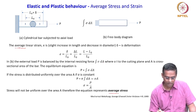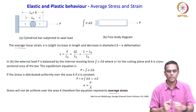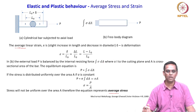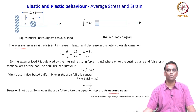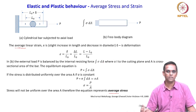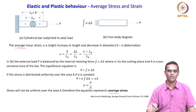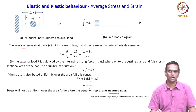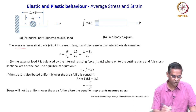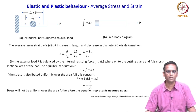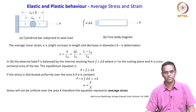When a body or member is subjected to external load, the strength of materials continuum concept assumes every point of the body experiences a similar force — but that need not be the case in reality. Some parts may undergo more stress than others. That is why it is called average stress, and similarly average strain — the stress and strain are not necessarily uniform throughout the body.